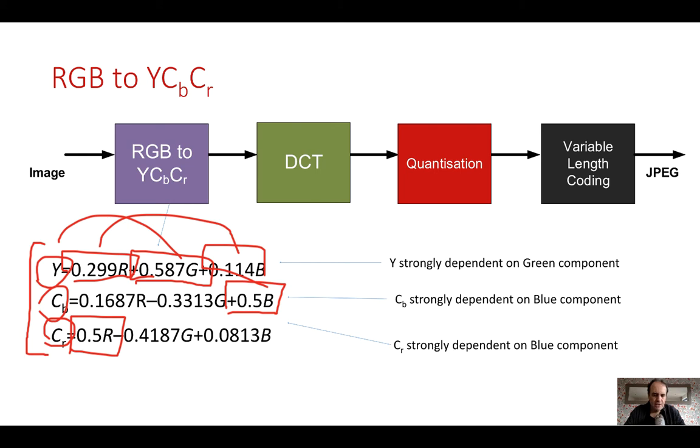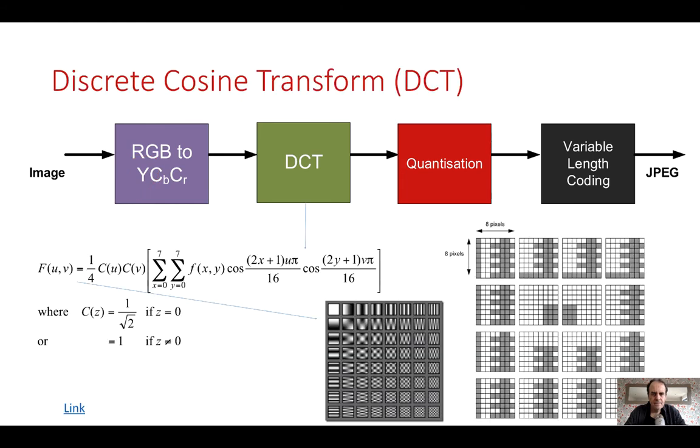That's the conversion that happens. We need to make sure that the luminance is fairly well defined because our eyes are fairly sensitive to changes in brightness and less so for small changes in color. The second part of the process is the discrete cosine transform or DCT.